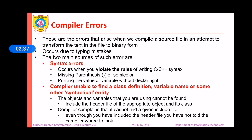Syntax errors occur when we do not follow the rules for C++ syntax. For example, if we open a function, we require an opening parenthesis and a closing parenthesis. But if by mistake we open the function and forget to close it using curly braces, then syntax errors may occur. Similarly, if we forget to place a semicolon at the end of a cout or cin statement, we may get syntax errors.